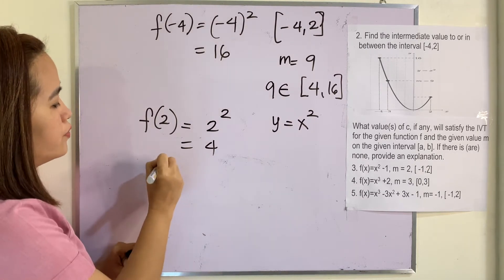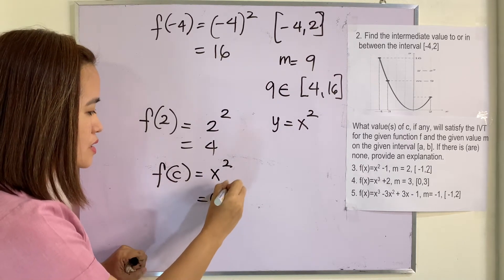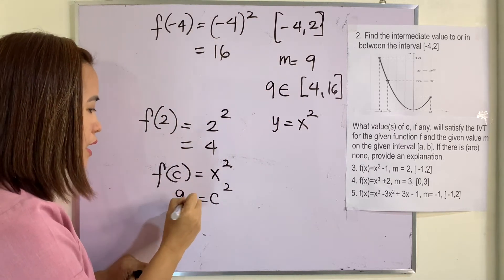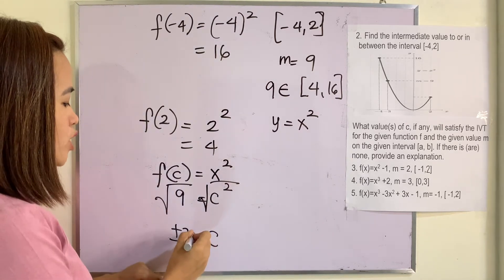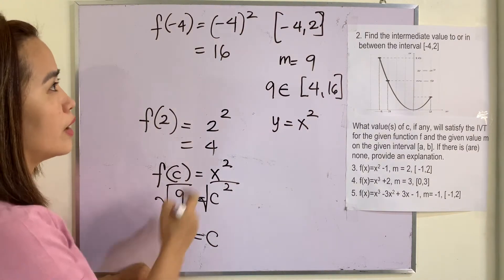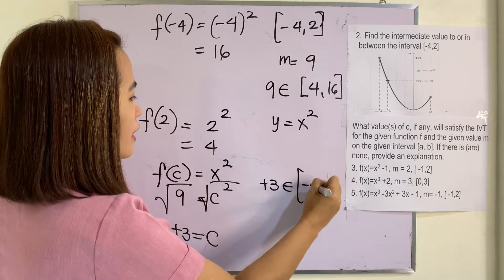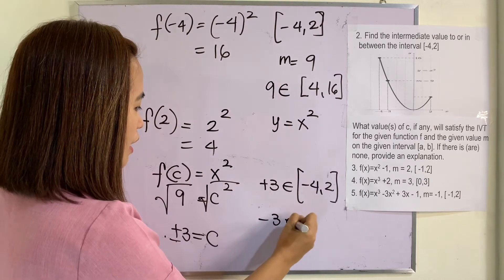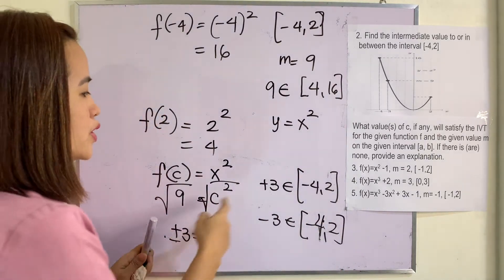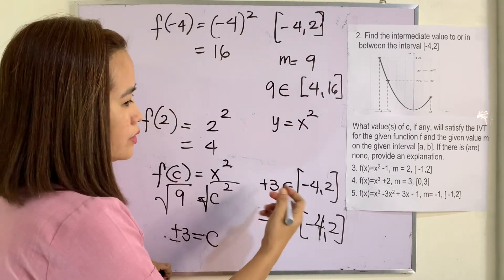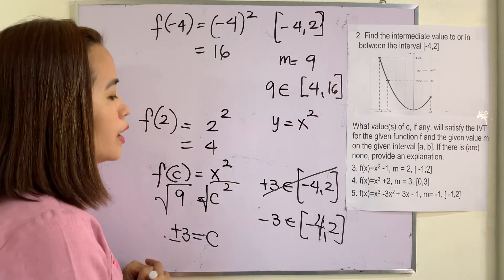Now let us solve for c. f(c) equals x squared, replacing x by c gives c squared. And f(c) is equivalent to m, which is 9. Getting the square root, c is equal to positive or negative 3. Now which of these two belongs to the interval [-4, 2]? Is positive 3 an element of [-4, 2]? Is negative 3 an element of [-4, 2]? Using the number line, positive 3 is not an element of [-4, 2]. Therefore, our intermediate value is negative 3.